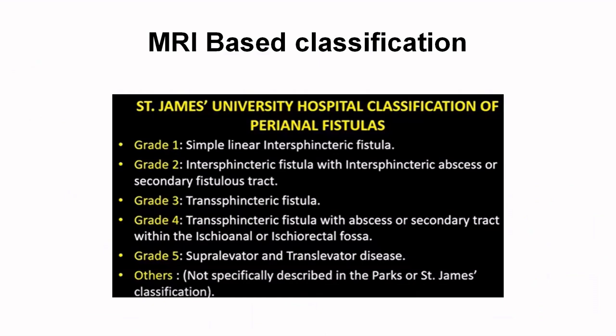Now we will see MRI and MRI fistulography separately. But just to complete this classification topic: the St. James University Hospital classification of perianal fistula is an MRI-based classification. There are five types, plus an 'others' category for fistulas not described in Parks or St. James classification — a very rare category. Usually you will have inter-sphincteric, trans-sphincteric, or supra-levator. The St. James classification is also more or less like the Parks classification.